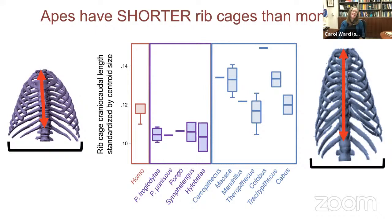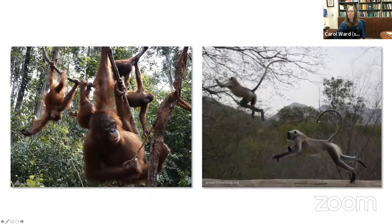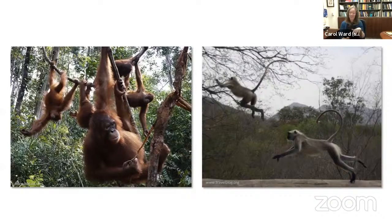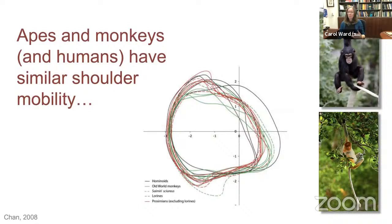The real difference between apes and monkeys is that apes have a much shorter torso, not a wider one. Lapki Chen showed that in terms of shoulder mobility and range of motion, apes and monkeys really aren't very different despite very different torso shapes. So these differences can't be explained by shoulder mobility or posture. Something else is driving this.